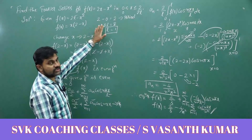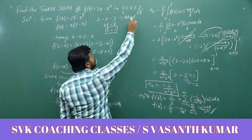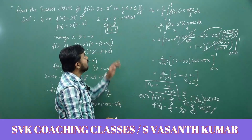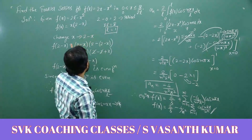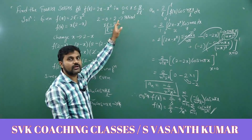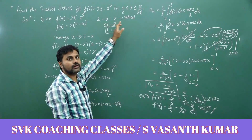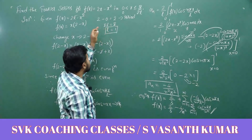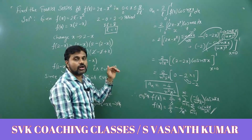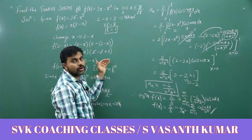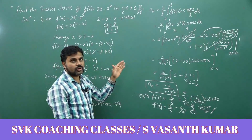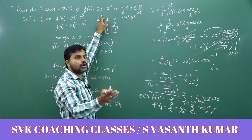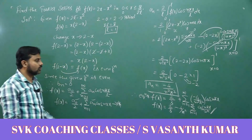In case the interval were [0, 3] instead of [0, 2], if you verify for even or odd, the function would be neither even nor odd. In that case, you would need to find all three Fourier coefficients: a₀, aₙ, and bₙ. Such functions are called neither even nor odd functions.